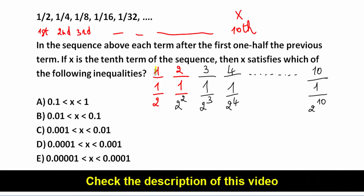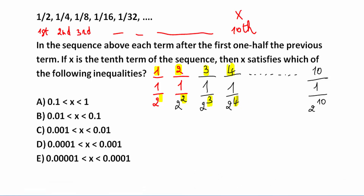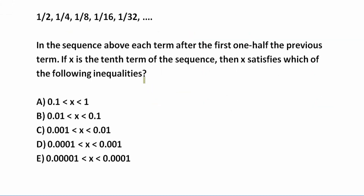You can see the pattern: the first term has 2 to the power of 1, the second term has 2 to the power of 2, the third term has 2 to the power of 3, the fourth term has 2 to the power of 4. So the tenth term is 1 over 2 to the power of 10. Therefore, x equals 1 divided by 2 to the power of 10.